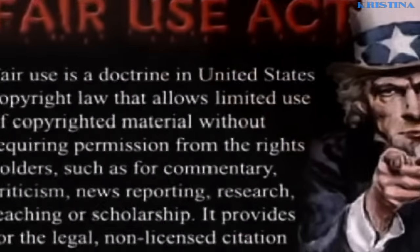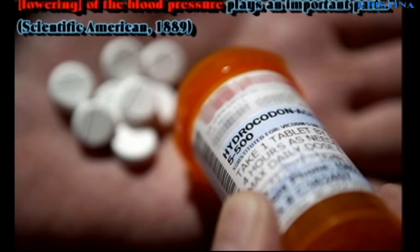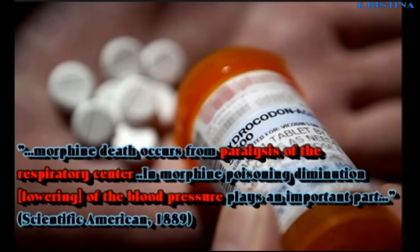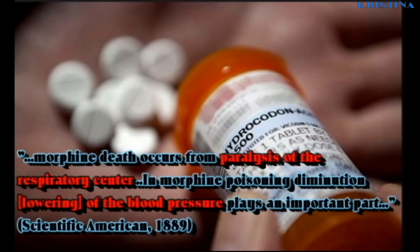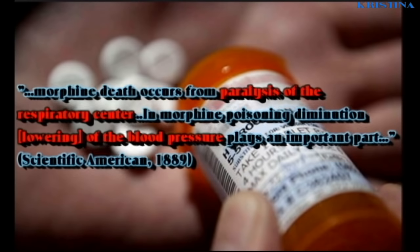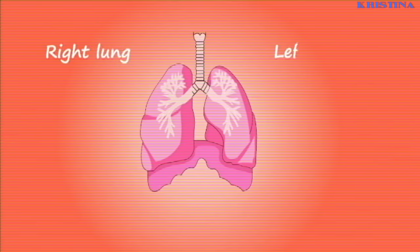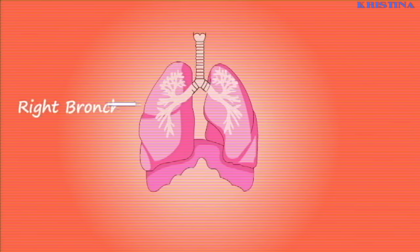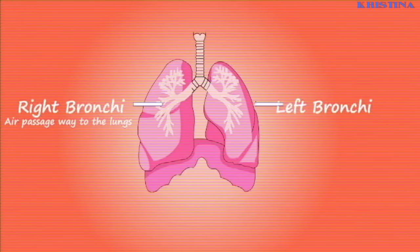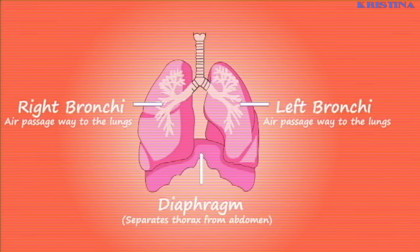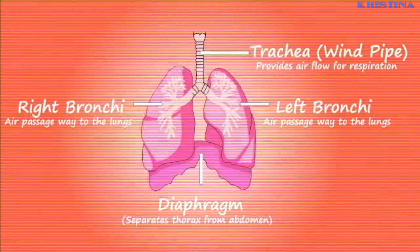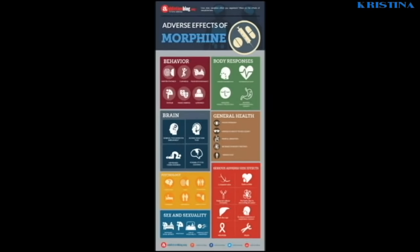Notice the dangers of morphine — this was not very difficult to find; it's well known. We'll go to Scientific American in 1889. This stuff's been known for over a century. Morphine death occurs from paralysis of the respiratory center. In morphine poisoning, a lowering of blood pressure plays an important part. The more morphine you get, the slower you breathe, the more you struggle to breathe, and the lower your blood pressure goes. Morphine stops your lungs and stops your heart.